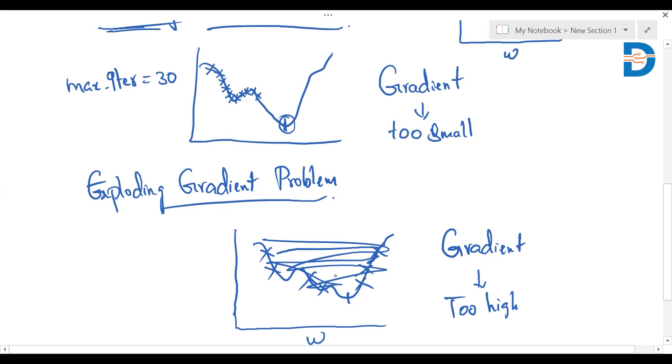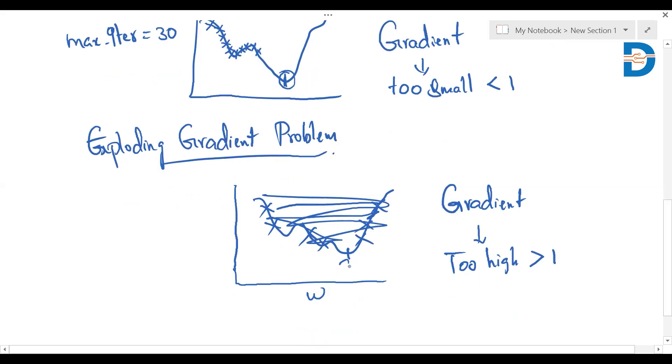So that is what we call it as exploding gradient problem where we can assume this is greater than one. If it is too small, we can say this is too much lesser than one. So when this happens,